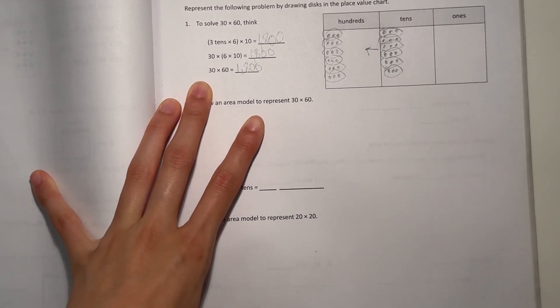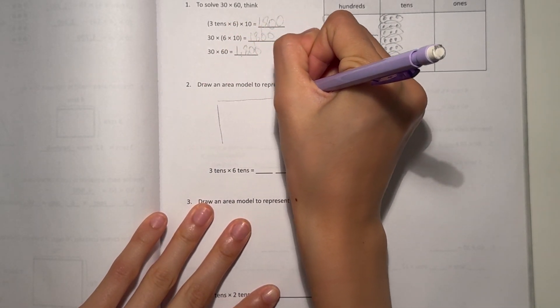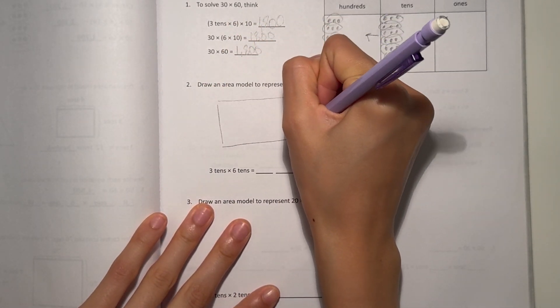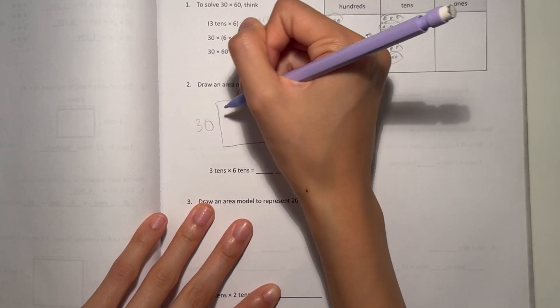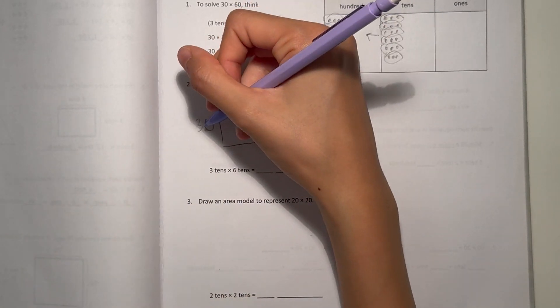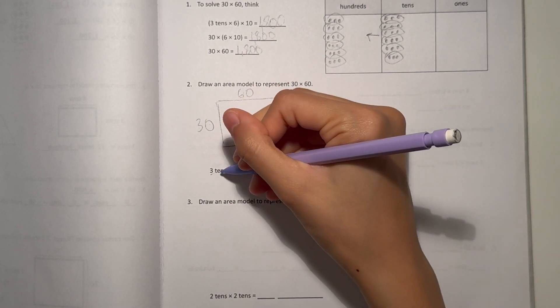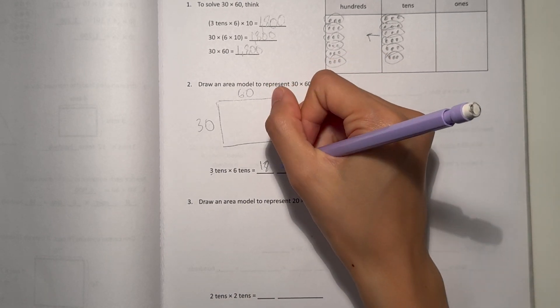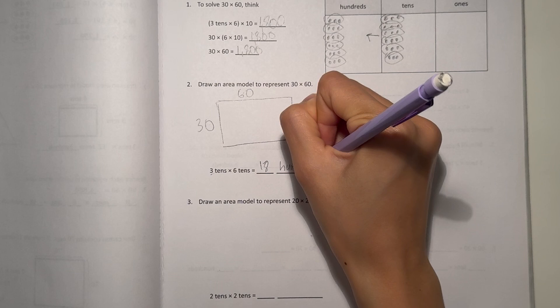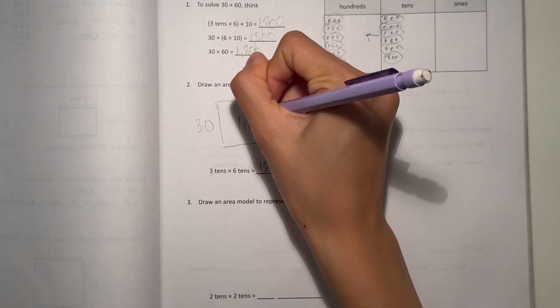Number two says, draw an area model to represent 30 times 60. So an area model, just draw it like this. We have 30 and 60. 30 times 60. Think of it as 3 tens times 6 tens, that's 18. But notice how it's tens and tens. Here we won't write tens, we'll write hundreds, and that is because if you take 10 times 10, that's 100. So it's 1,800.